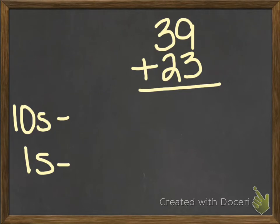So let's take a look at our first problem, and we're going to do partial sums. And you'll notice that I have 39 plus 23, and off to the side I've got tens and ones written down. So basically what you're going to do is you're going to look at your tens column, which has your 3 and your 2, and you're going to add 30 plus 20, and that's going to give you 50.